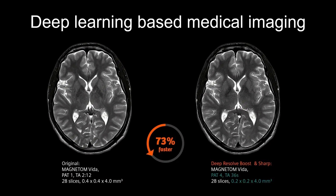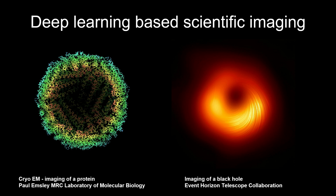Then you have deep learning-based medical imaging. This is really just starting — if you go to a hospital today, it's actually unlikely to be used. But in a very modern hospital, deep learning is used to accelerate MRI scans and make the quality better, so the image that radiologists see can be deep learning generated. In the future, they will all be generated by neural networks because it works so much better. This also happens in scientific imaging — for example, imaging a protein or imaging a black hole. It's having a huge impact across all kinds of imaging systems.